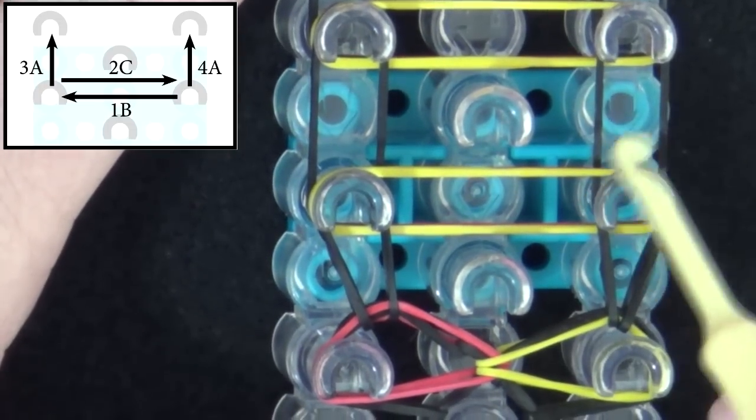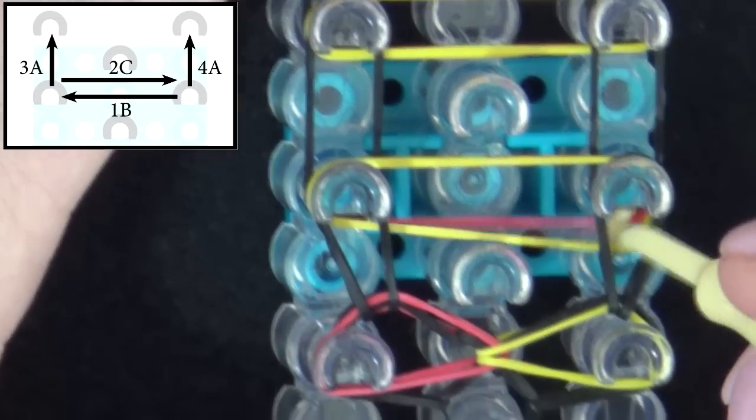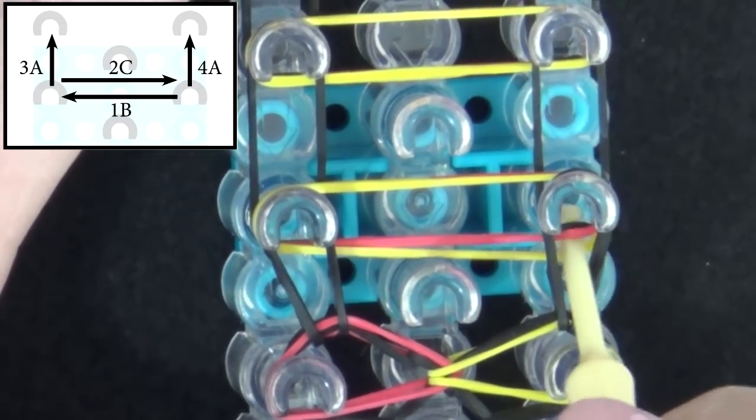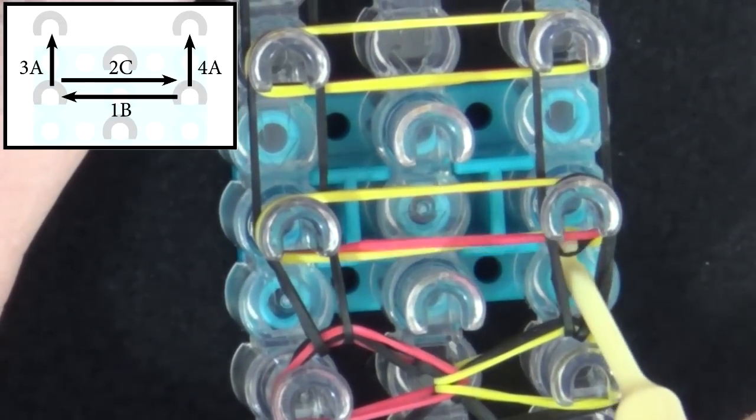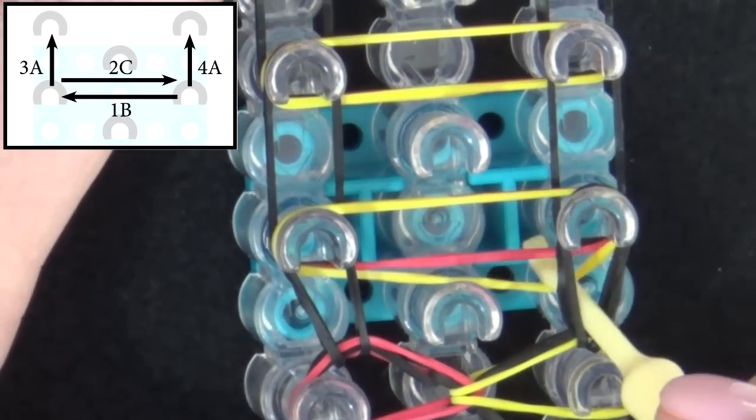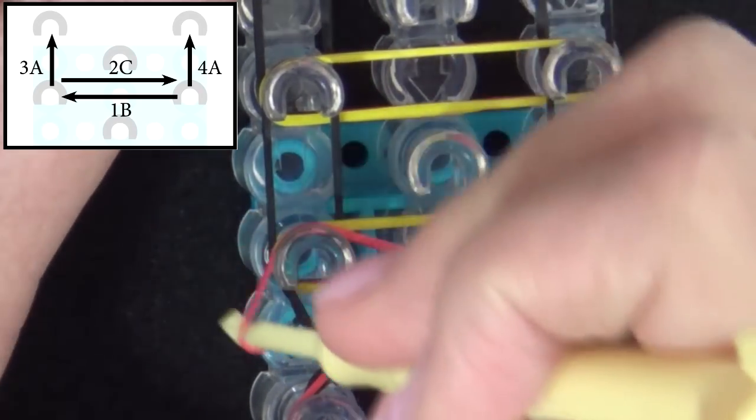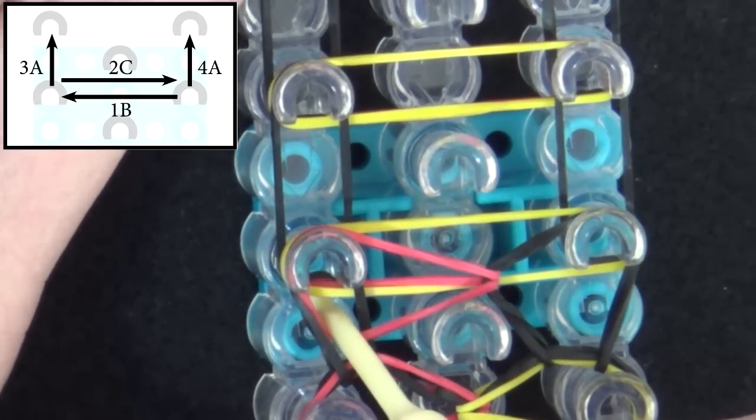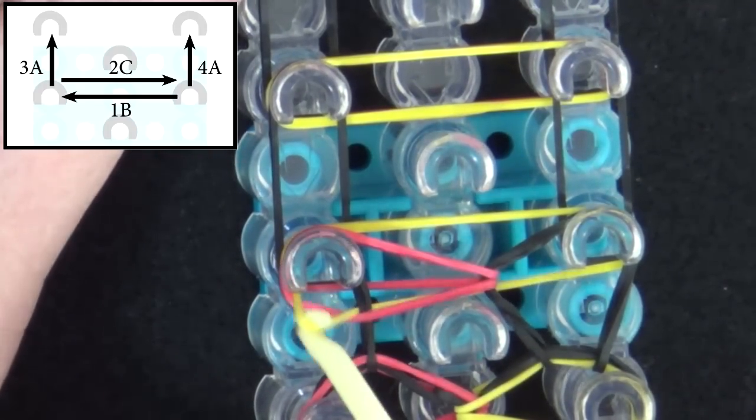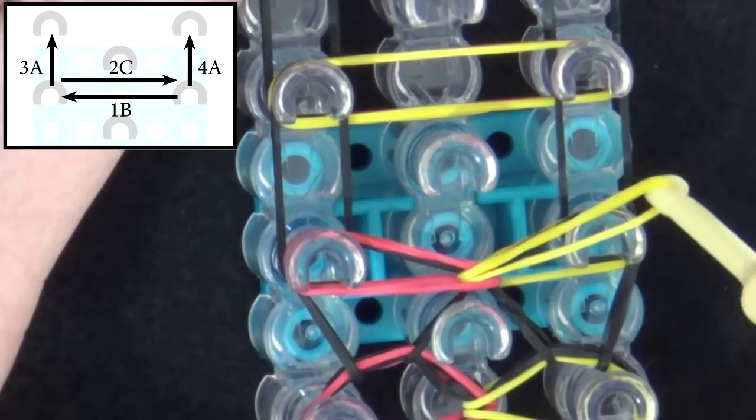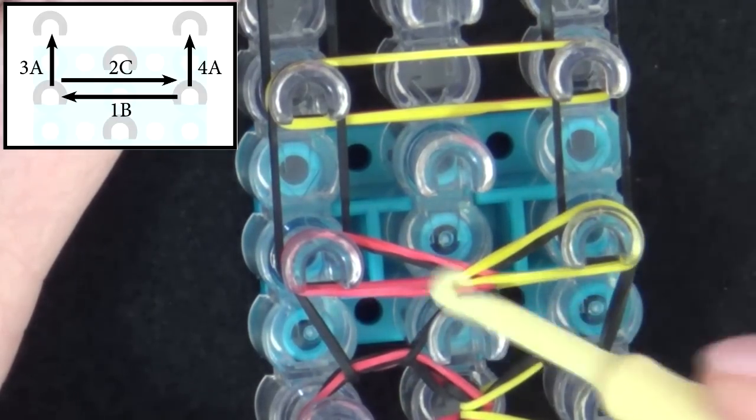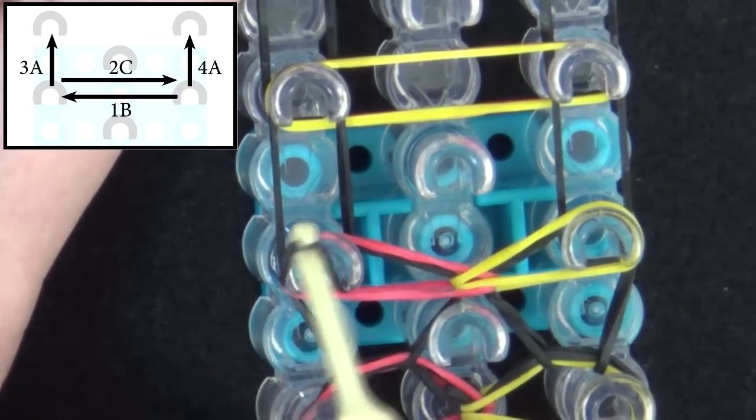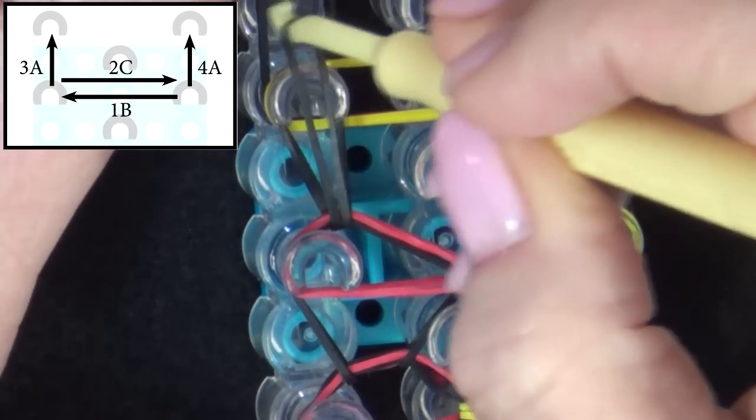We'll do this again, and you can refer to the graphic on the top of your screen. We reach in and grab our B band on our hook, and pull that over to the left. Number two, we get our C band and pull it to the right. Number three, we pull those back, grab our A band, and pull it forward.